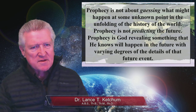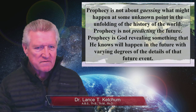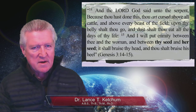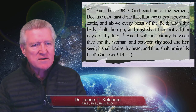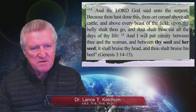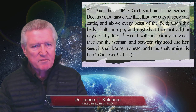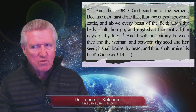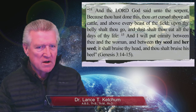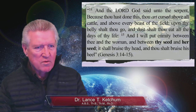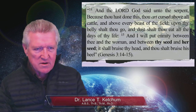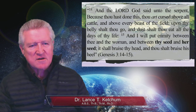The first prophecy in the Scriptures is found in Genesis 3:15, often referred to as the proto-evangelium, which means the first promise or the first prophecy of God in the Bible. It's a prophetic promise. Genesis 3:15 speaks of the promised one in the seed of the woman, and it is the all-encompassing prophetic statement upon which all other prophecies are built. Every thread of prophecy builds upon this one or is an expansion of it.